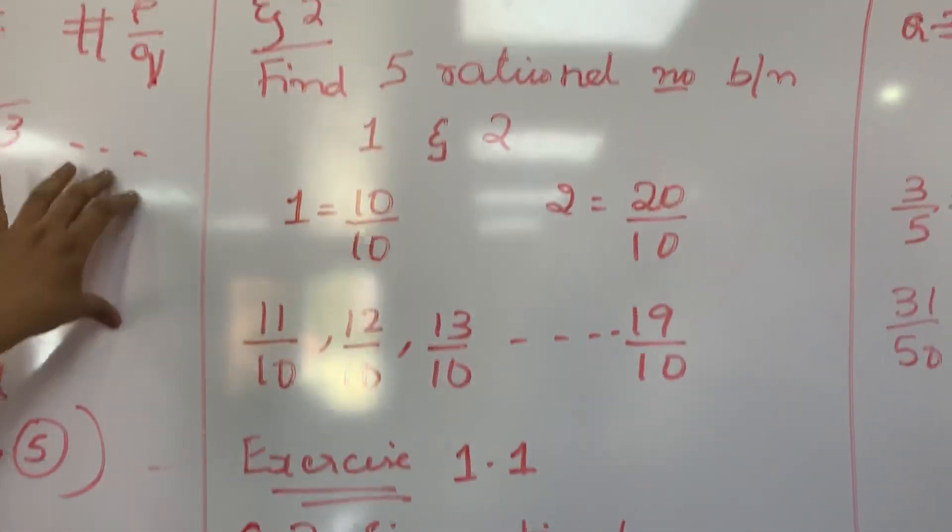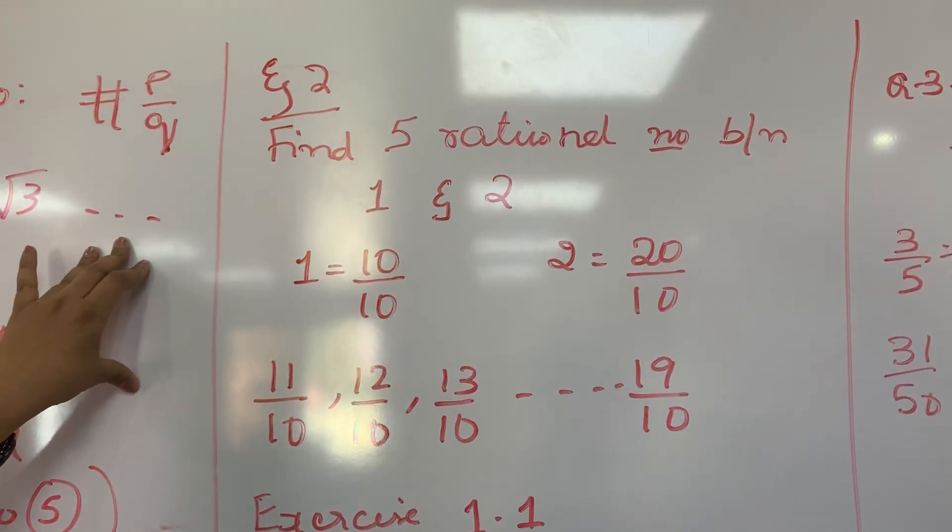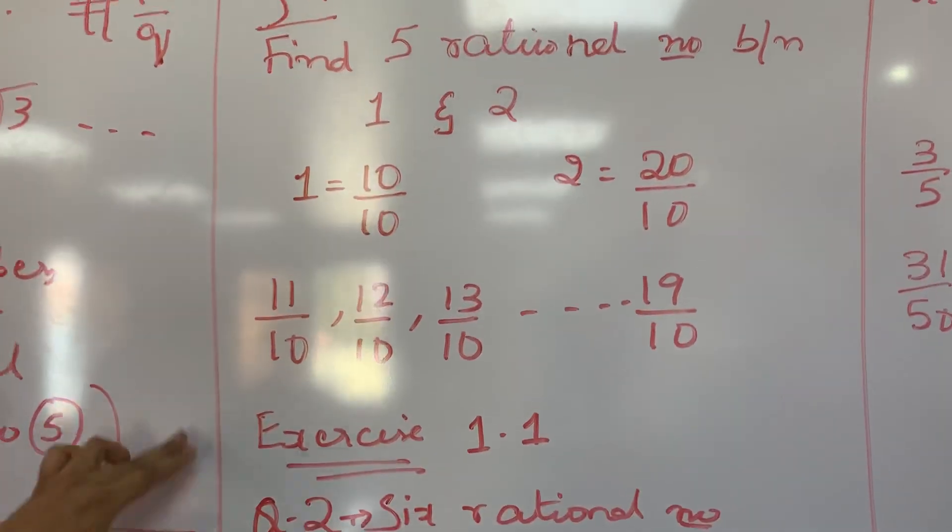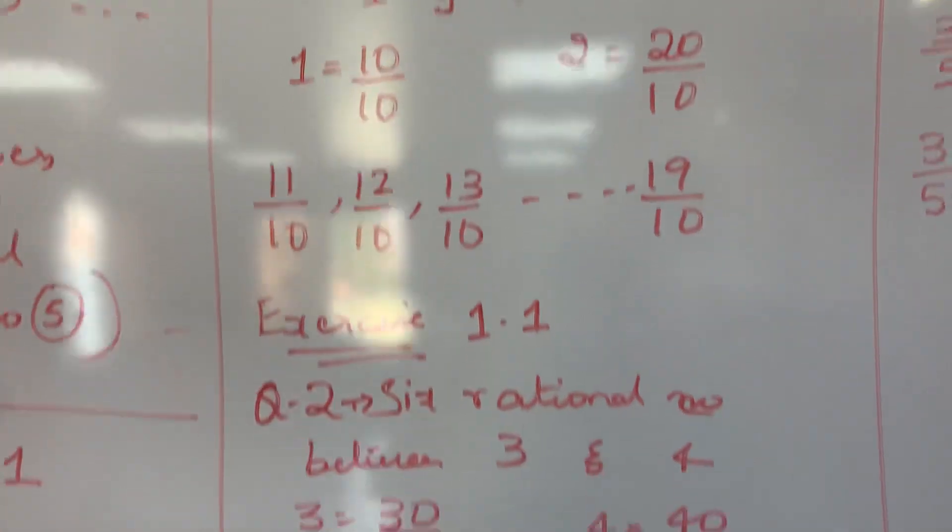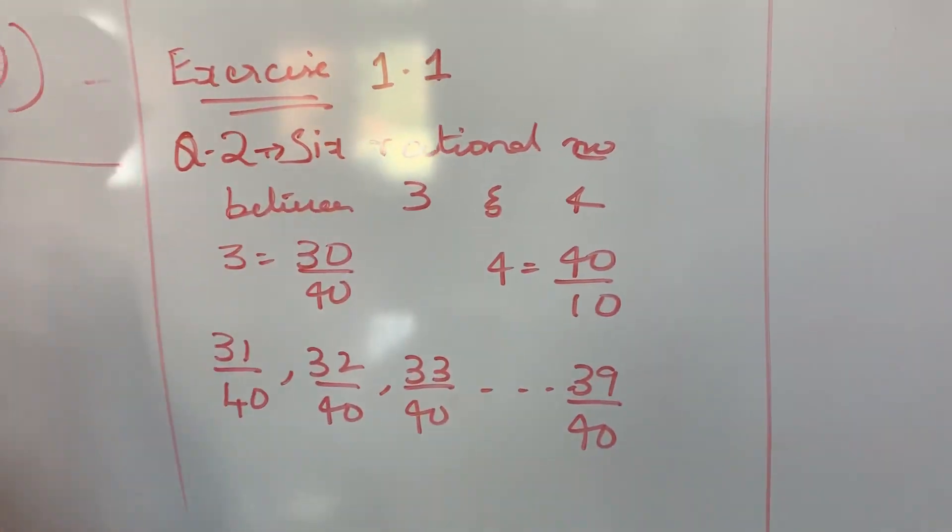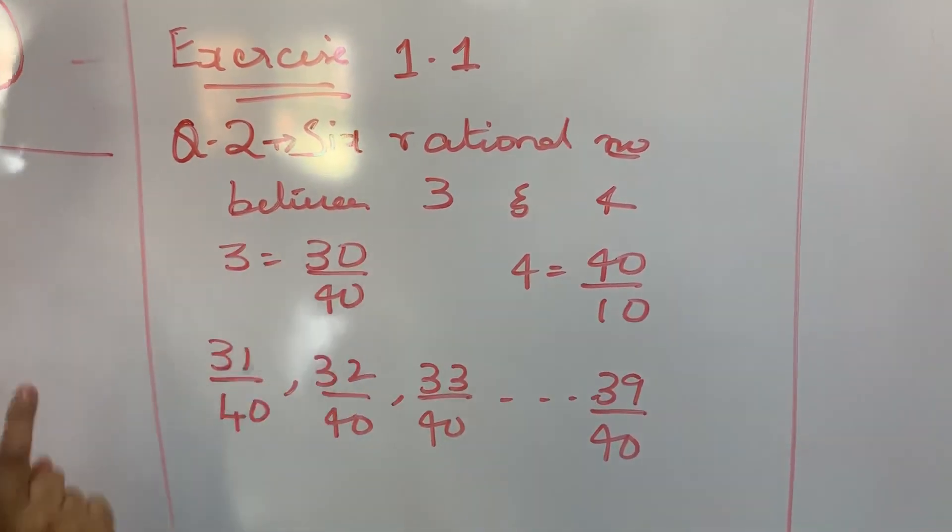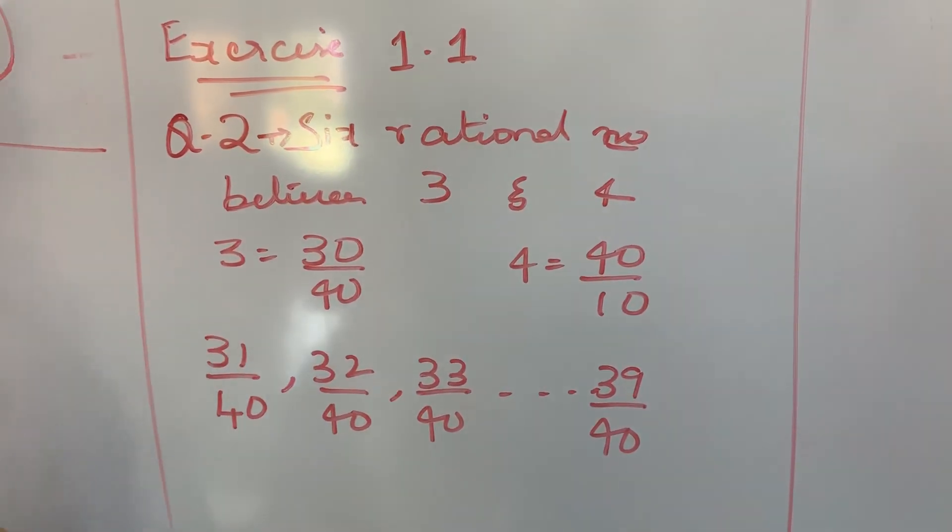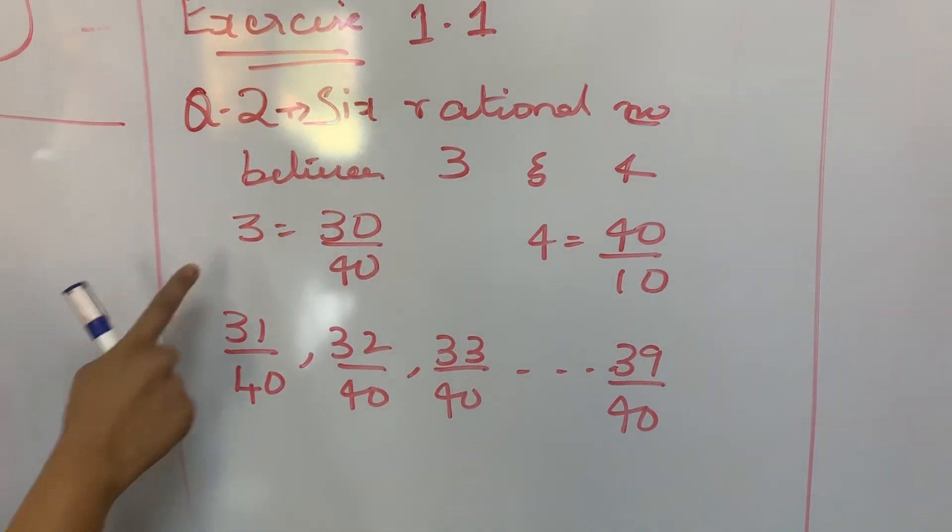Based on this, there are few questions which you can solve in exercise 1.1. Even that let us discuss. See in exercise 1.1, question 2, the question is find 6 rational numbers between 3 and 4. So again write 3 as 30 by 10.